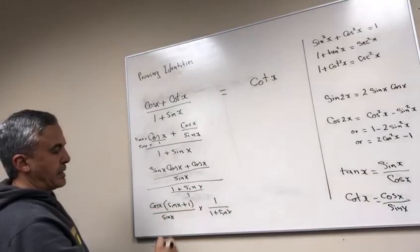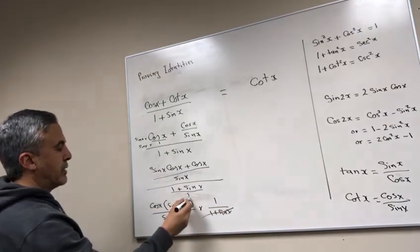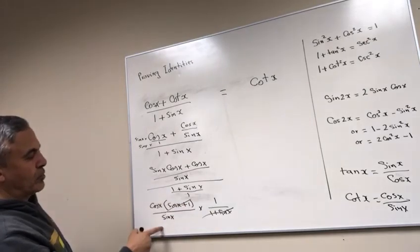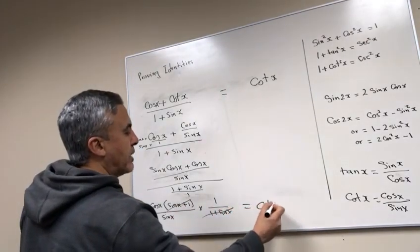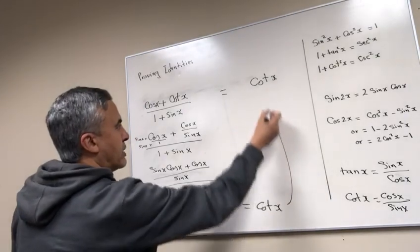You cancel this and you cancel this and you cancel this, and then you're left with cos over sine, which equals cotangent X, which therefore equals that.